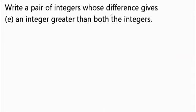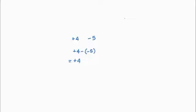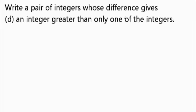To get an integer greater than both, it's exactly the opposite: the first number has to be positive and the second has to be negative. For example, plus 4 minus minus 5 — same signs — becomes plus 4 plus 5. Plus plus is addition: 5 plus 4 is 9, and plus 9 is greater than both plus 4 and minus 5.